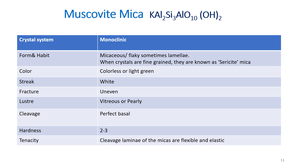All mica group minerals belong to the monoclinic crystal system. Their habit is flaky or micaceous — sometimes very thin lamellae are present. When crystals are very fine-grained, the mica is known as sericite. The color of muscovite is colorless to light green; streak is white; fracture is uneven; luster is vitreous to pearly.